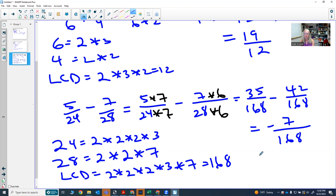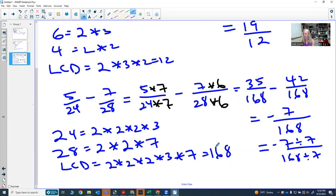If you notice, 7 does divide into both these numbers. So I can divide both numbers, the numerator by 7 and the denominator by 7. And I now end up with negative 1.